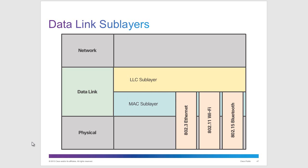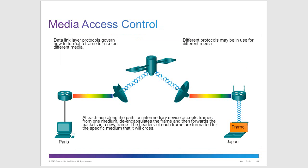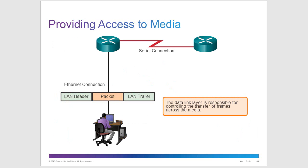Each device on the network accepts a frame, de-encapsulates it, puts a new frame on the packet, and sends it to the next device. The new frame depends on what type of media the frame will travel on, and the MAC address changes from the previous source and destination to the new source and destination. Each hop along the path, a device accepts the frame, de-encapsulates it, re-encapsulates the packet into a new frame, and forwards it over the appropriate medium.